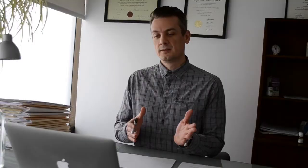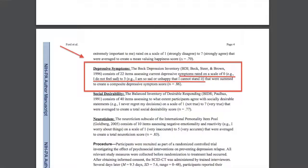Rated on a scale of one, strongly disagree, to seven, strongly agree. And the Beck Depression Inventory, which consists of 22 items assessing current depressive symptoms rated on a scale of zero, I do not feel sad, to three, I am so sad or unhappy I cannot stand it.